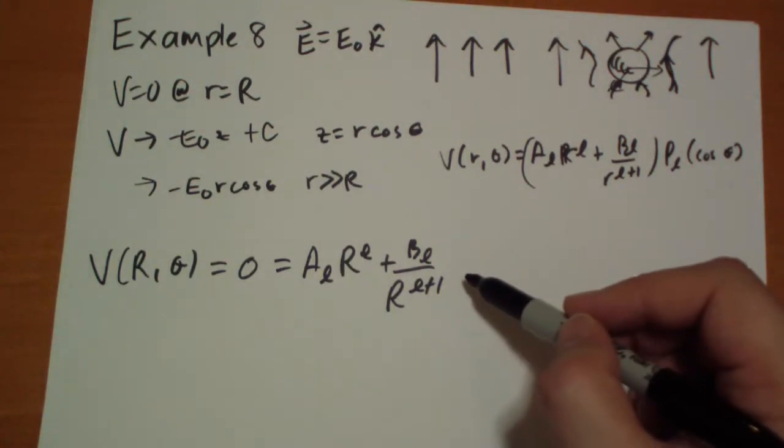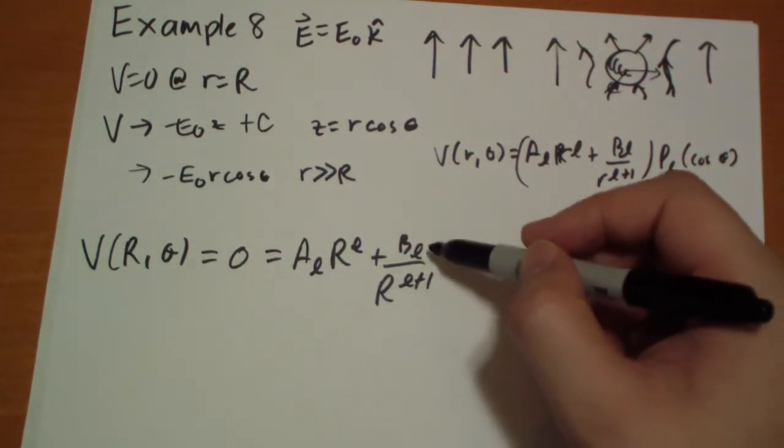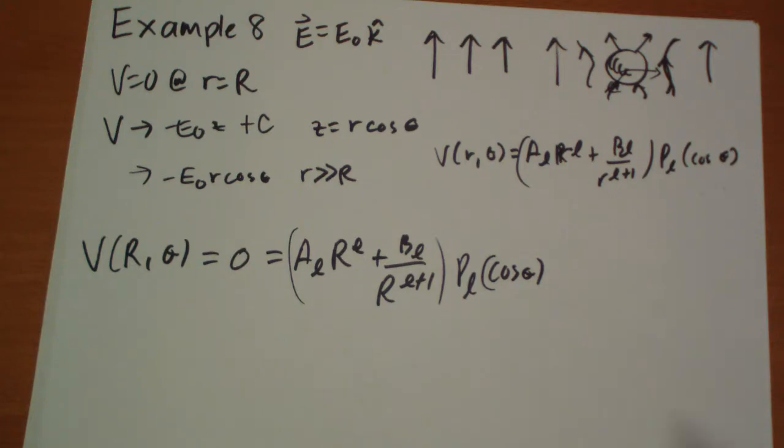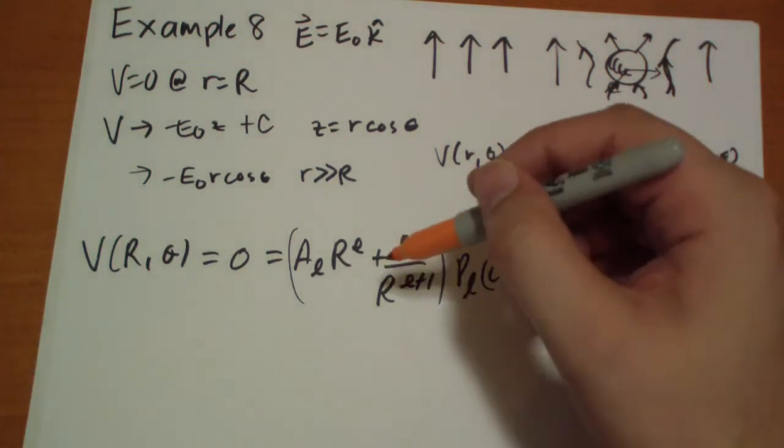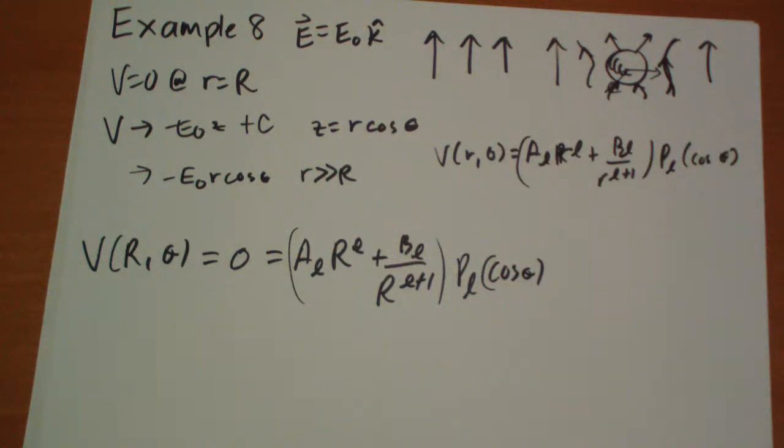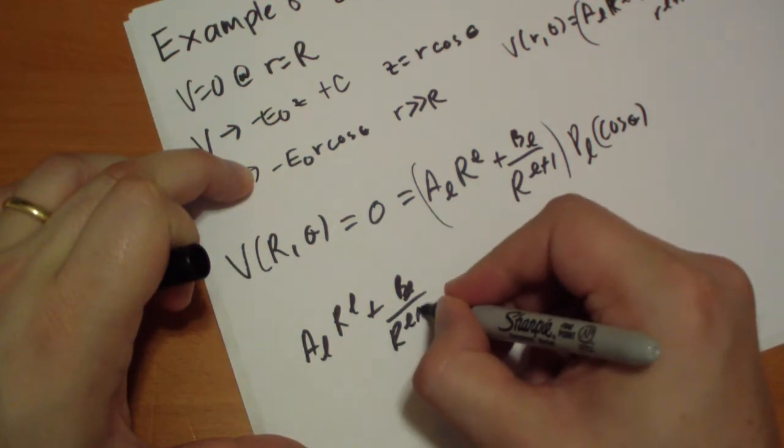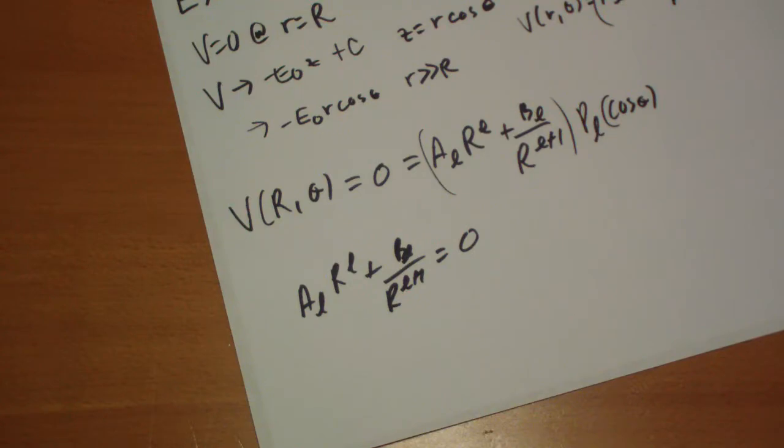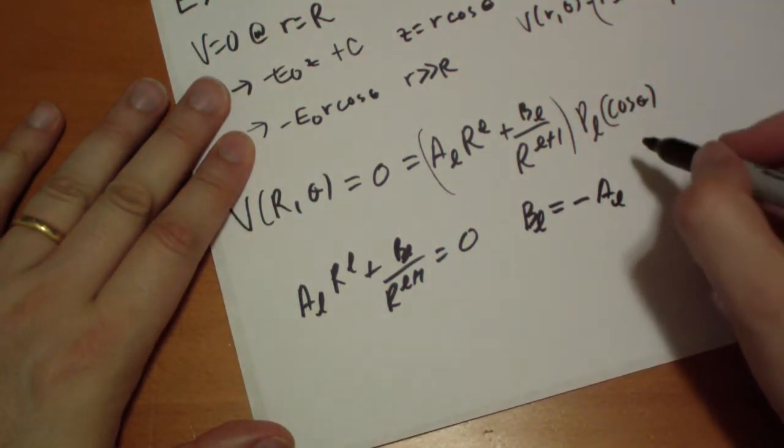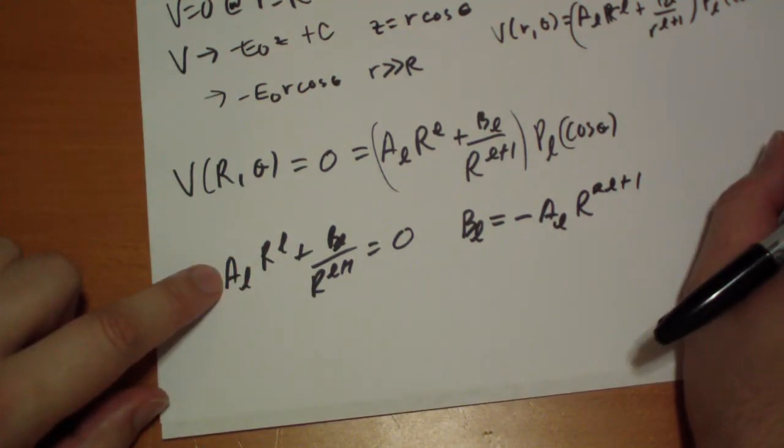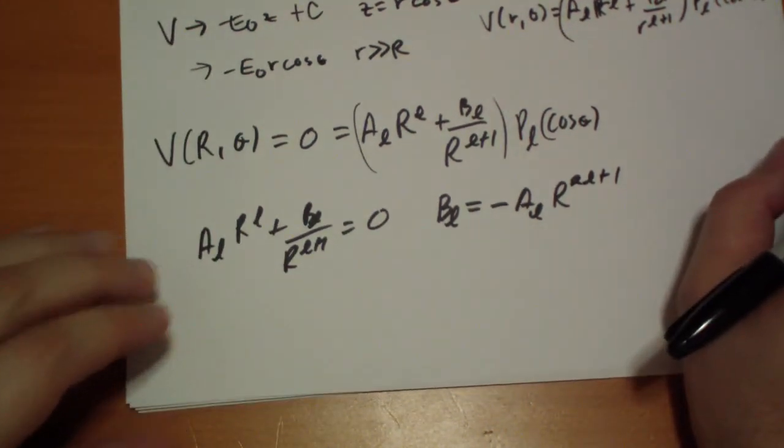Obviously, as we vary cos theta, that could change. So we have to set these constants. This P_L is never going to be zero except in very specific theta conditions, and only for specific L's as well. So this part right here has to be equal to zero all the time. And the way we do that is we solve this. We get B_L has to be equal to negative A_L R to the 2L plus one.